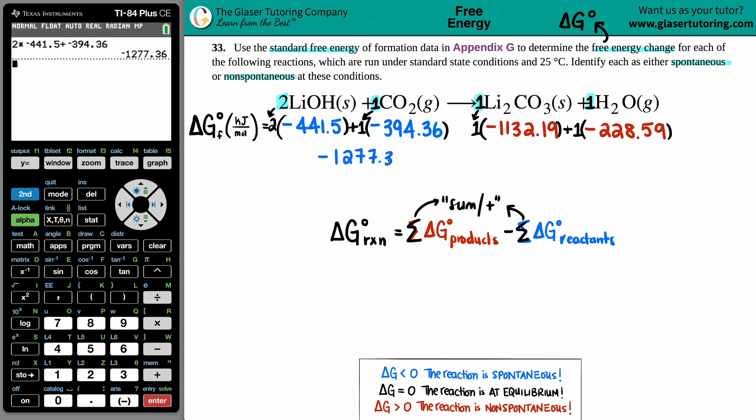Now let's do the same thing for the products. One times -1132.19, and then same thing here - you could say plus a negative or minus. I'll show you it's the same - you could just say minus 228.59. That gives us -1360.78.